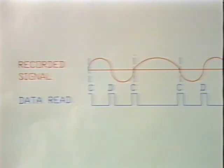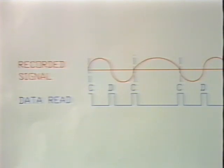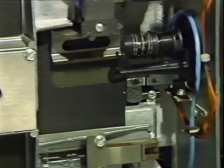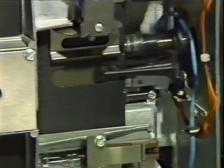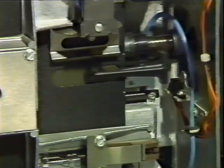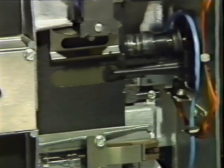To read the diskette, the head passes over the magnetic domains and the process is reversed. The changing domains induce current spikes in the head coil, and the drive logic board decodes the reversals into digital time-encoded data. The FDC then converts the data into parallel binary information for the processor. Floppy disks are random access storage devices, meaning they can reach any piece of data on the disk without having to read all of the data stored before it. This requires that the data on the disk be laid out in a standard pattern or format.